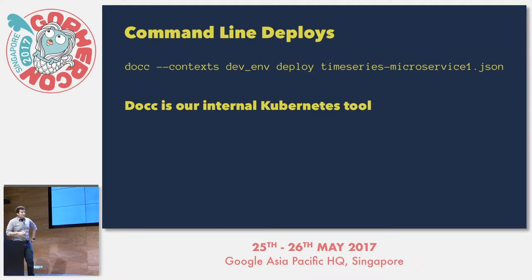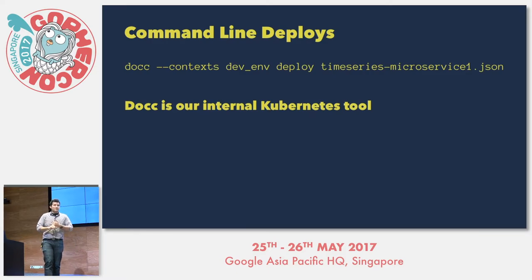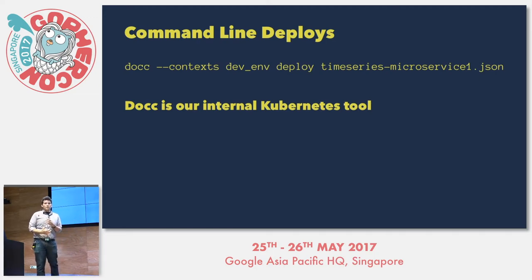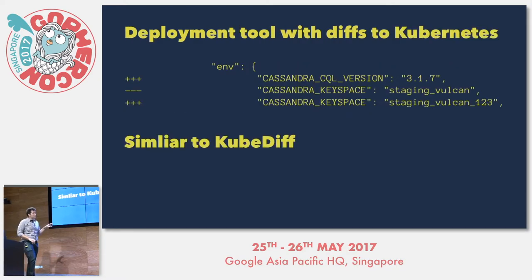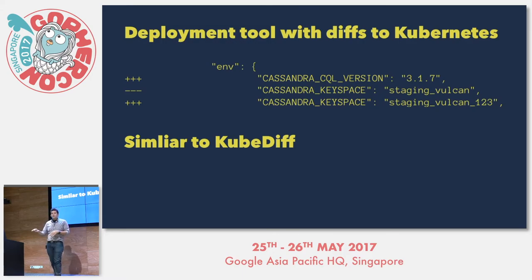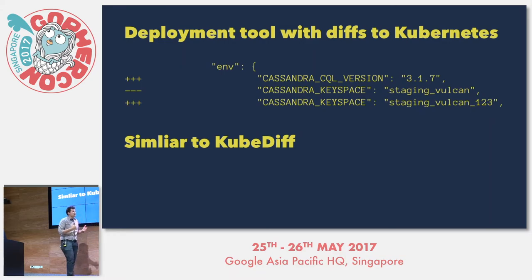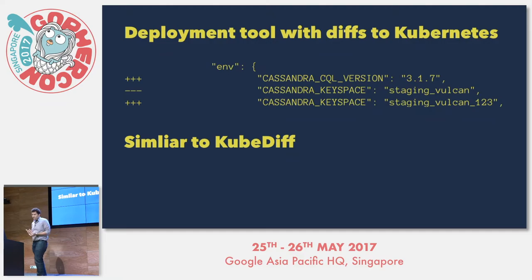With Kubernetes we did everything as command-line deploys. Kubernetes uses a single YAML file where you define your Go application, containers, and environment variables, then deploy with one line. We wrote our own tooling for multiple teams. One cool open source project to check out is kube-diff — if multiple people are deploying at the same time, it lets you make sure changes on production are merged with your changes, including environment variable configs.